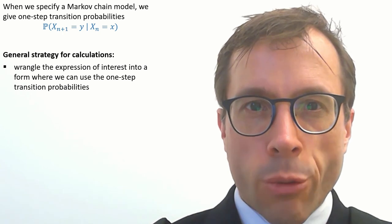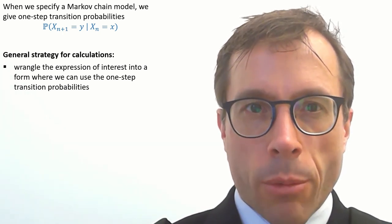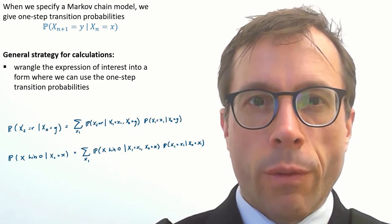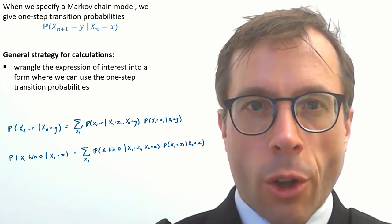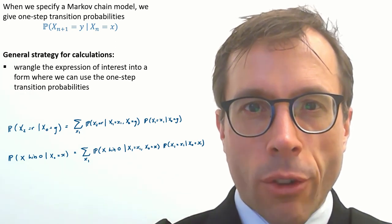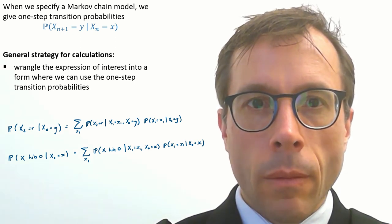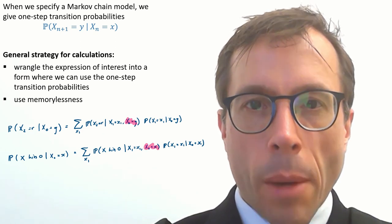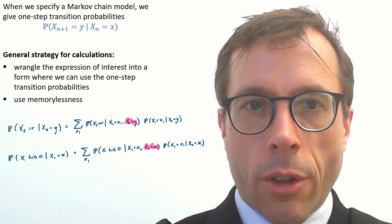And the general strategy for calculations leverages these two things. First, we want to wrangle the expression we're trying to compute into some form where we can use one-step transitions. Here are the two calculations we've just been through. In both cases, we use the law of total probability to condition on x1 because that lets us use our one-step transition probabilities. And the other part of the strategy is to use memorylessness, which lets us strike out the bits of the past that are irrelevant.